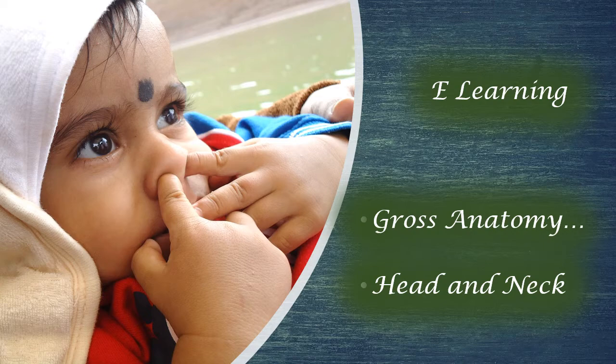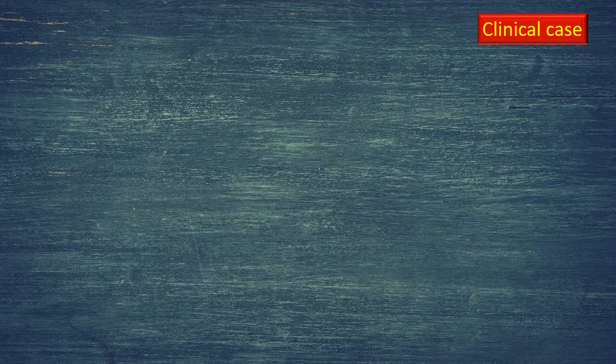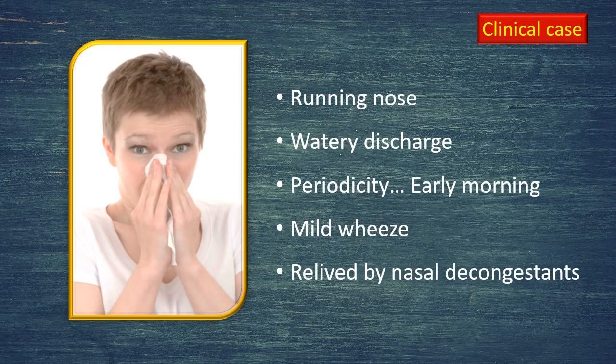Before we proceed with the details, let's look at a clinical case scenario to understand the importance of what we are going to learn today. A patient is reporting to the OPD with the following symptoms: running nose for three days, watery discharge present virtually every morning. There is mild sneezing and some relief with nasal decongestants. She gets this intermittently, especially in the mornings — looks like some kind of seasonal observation.